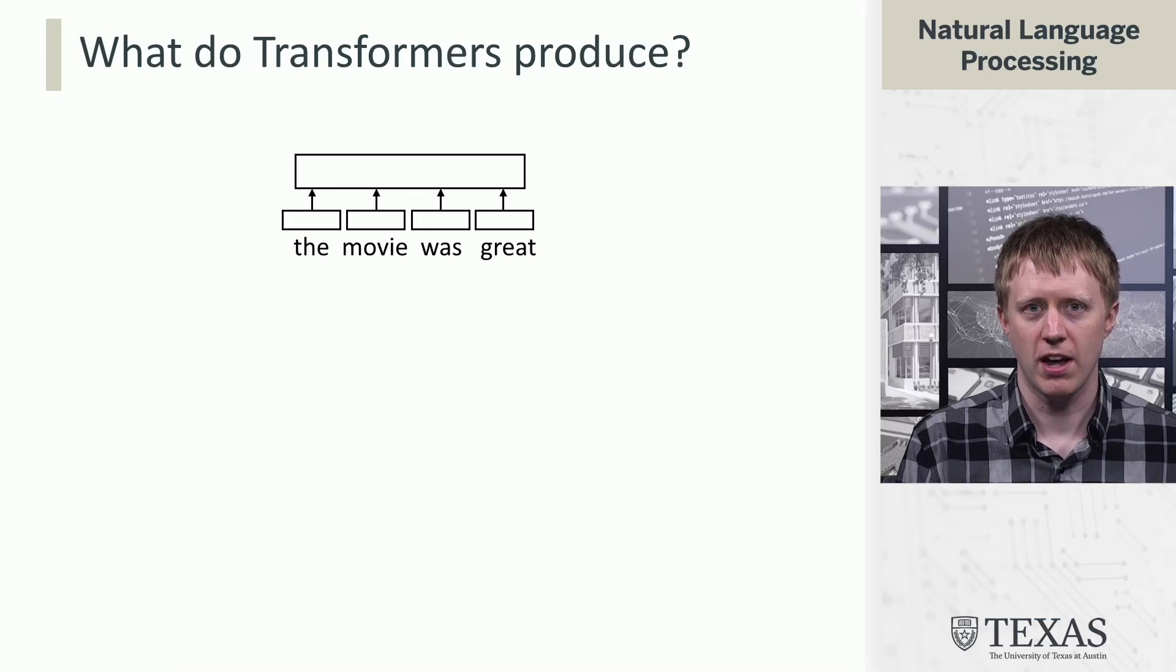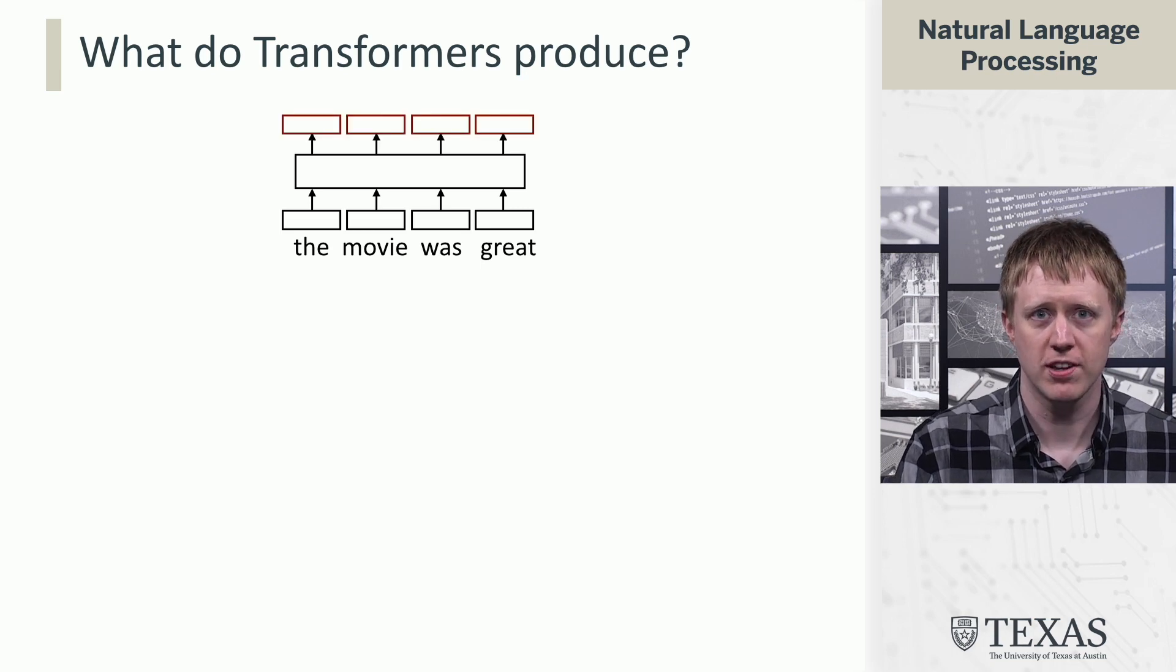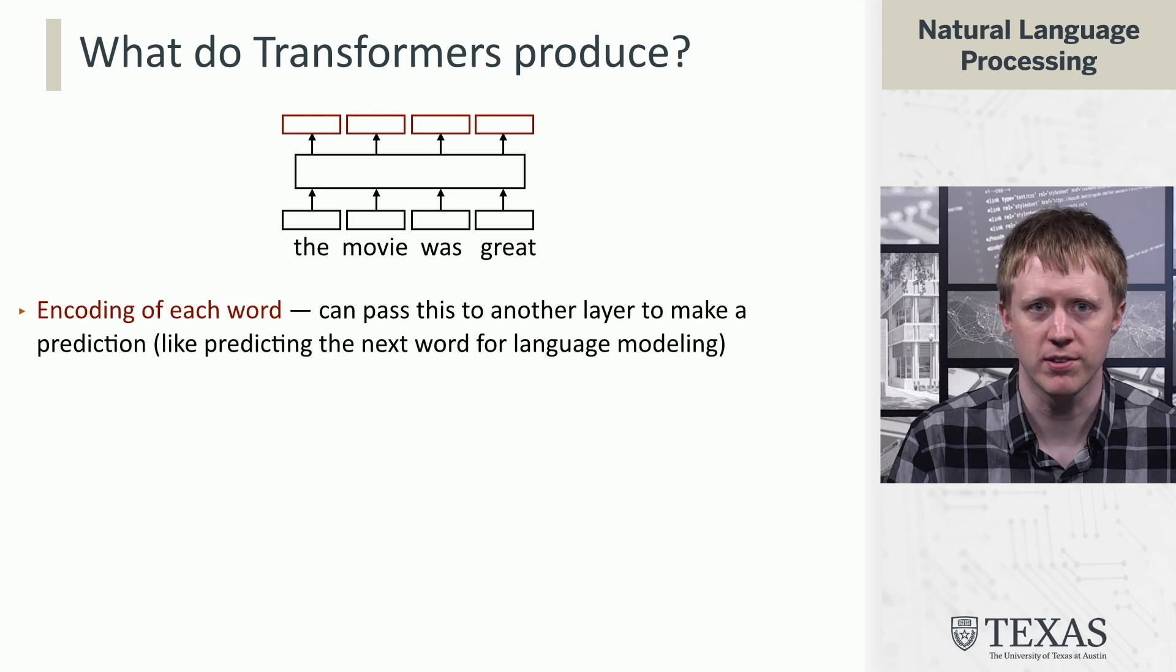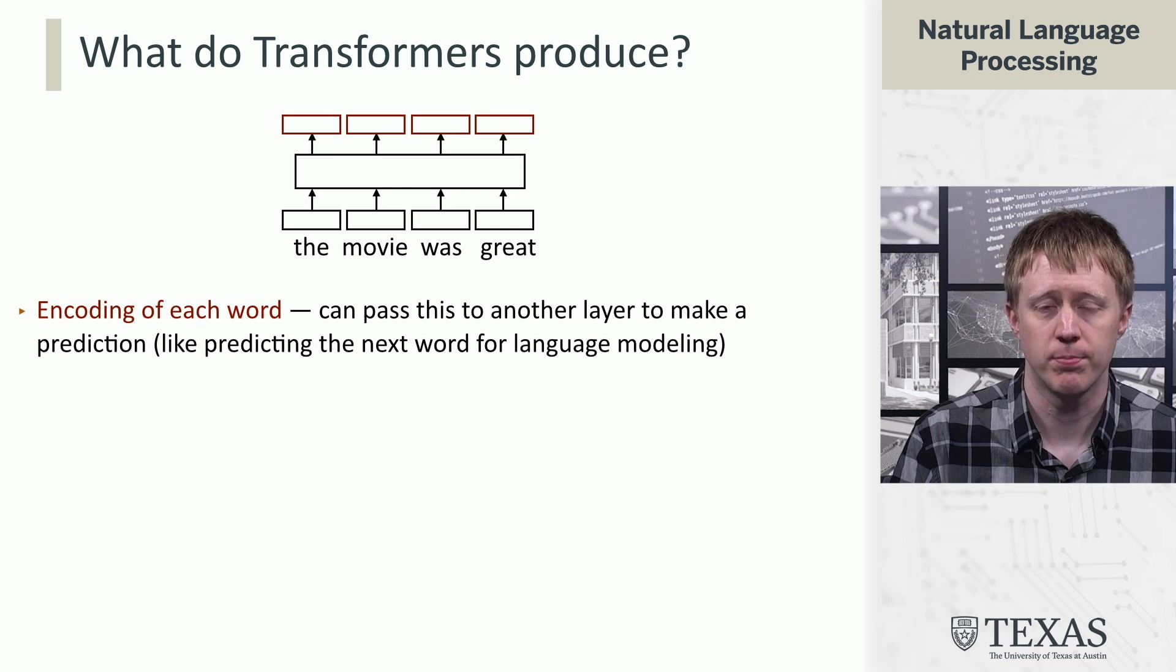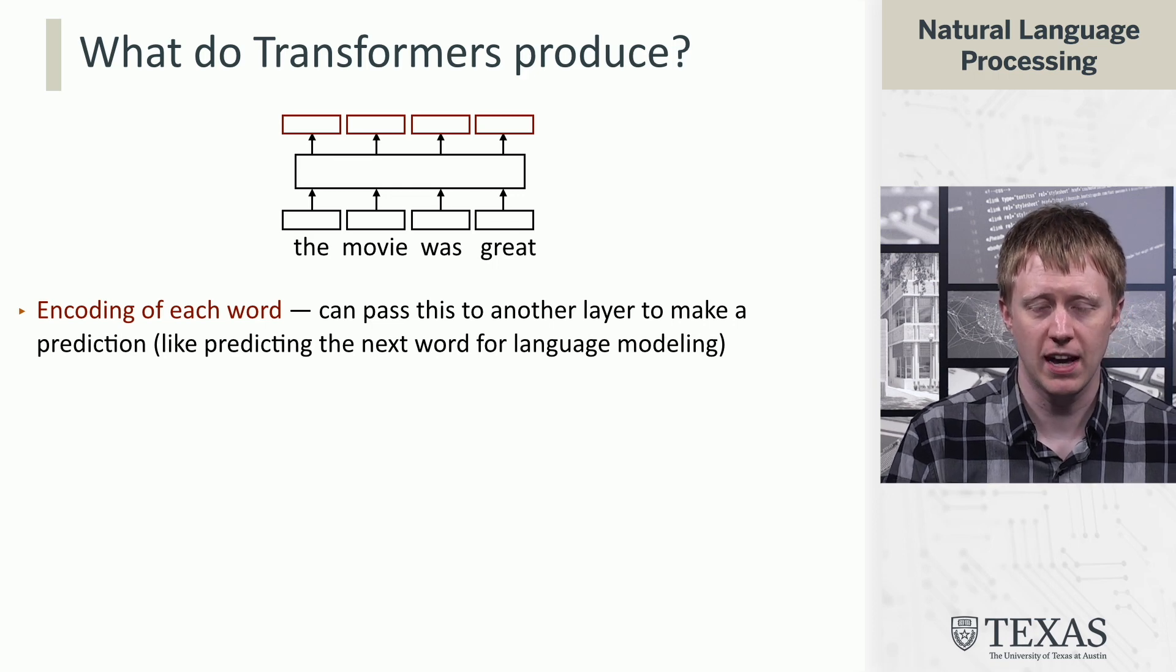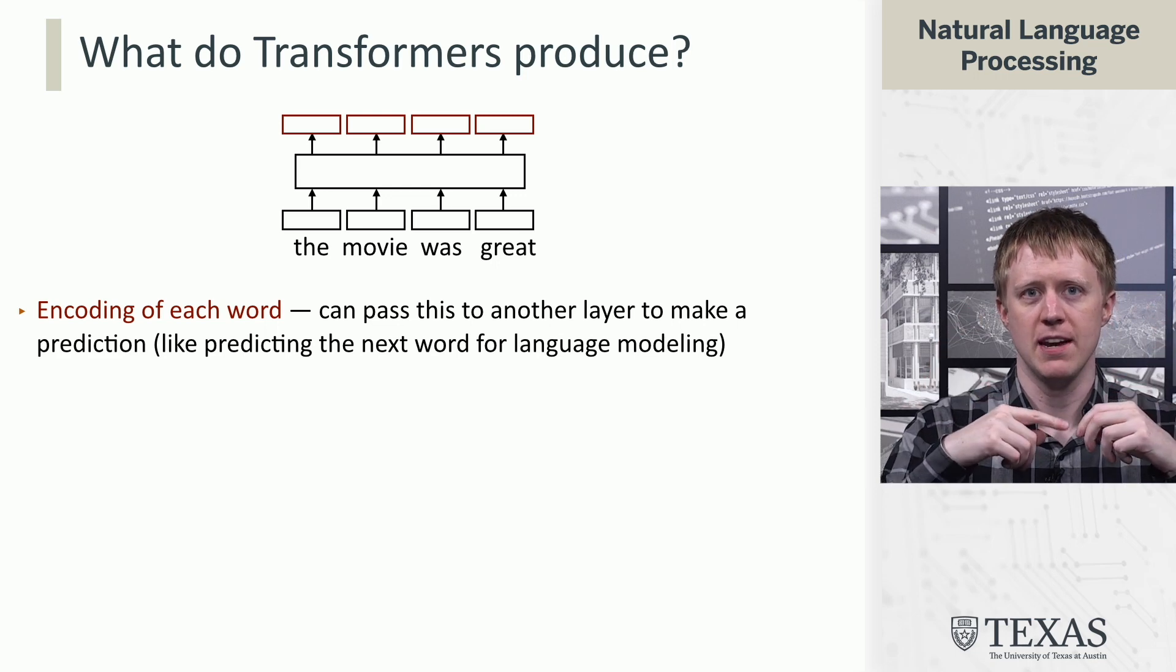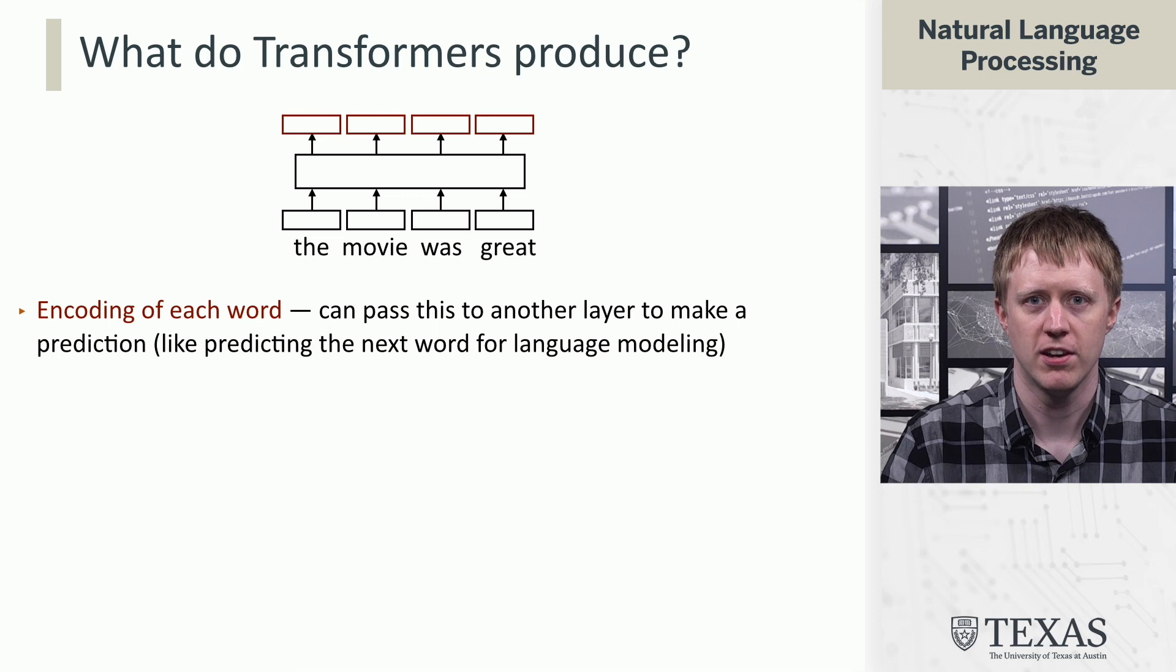As a reminder, what a transformer does is it takes a sequence of vectors as input and produces a new sequence of vectors as output, same length as the original sequence. We can view that as an encoding of each word, and what that's going to allow us to do is stack these things, but then ultimately take those and use them as proxies for those words to make predictions.